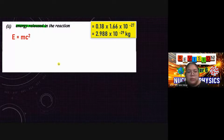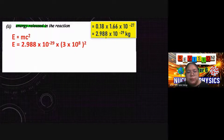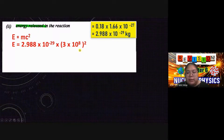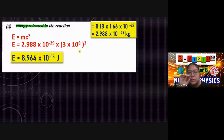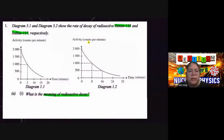Calculate the energy released using E = mc². The mass m is 2.988 × 10⁻²⁹ kg, and c = 3 × 10⁸ m/s. Square the speed of light, multiply, and the answer is 8.964 × 10⁻¹³ joules.